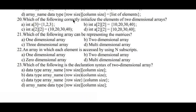Question number twenty: which of the following correctly initializes the elements of two-dimensional arrays? Option a) int a[3] = {1, 2, 3}. Option b) int a[2][2] = {10, 20, 30, 40}. Option c) int a[2][2] = (10, 20, 30, 40). Option d) int a[2][2] = [10, 20, 30, 40]. Option b is the right answer. The data type is int, array name is a, row size is 2 and column size is 2, giving 4 elements which must be written in curly braces. Hence option b is the right answer.